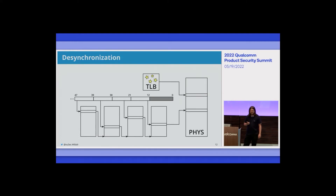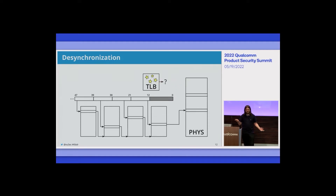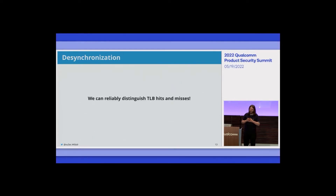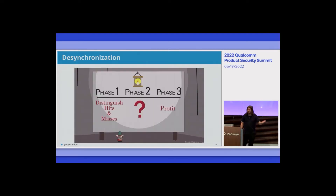We can do something even cleverer. Instead of invalidating the entry in the last-level page table, what if we just change it? Now the TLB points to one place and the page tables to another. A TLB hit goes to the original location; if the entry goes out of the TLB and page tables get walked, we go to the other location. If we put different data in both locations, we can reliably distinguish a TLB hit from a TLB miss — without using any timing side channel.